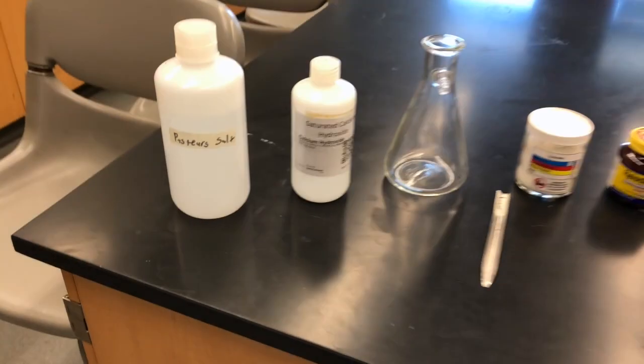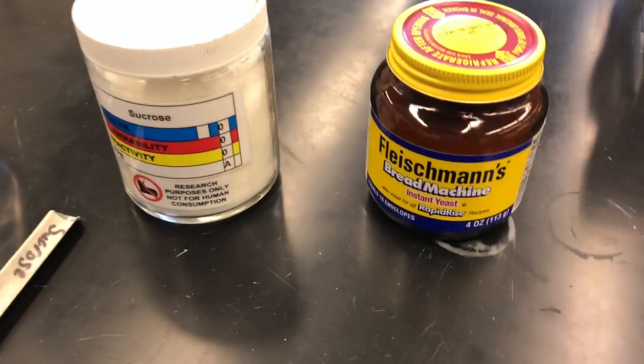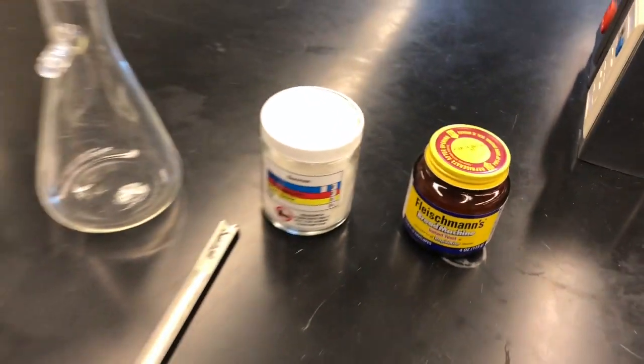We'll start with setting up our fermentation, getting all of our materials together. We start from the left, we have our pasteurized salts, solution of calcium hydroxide, our flask, our sucrose, and our yeast.